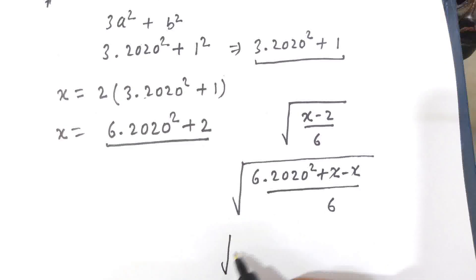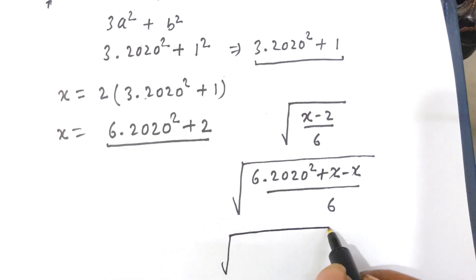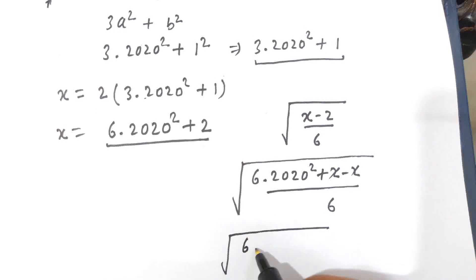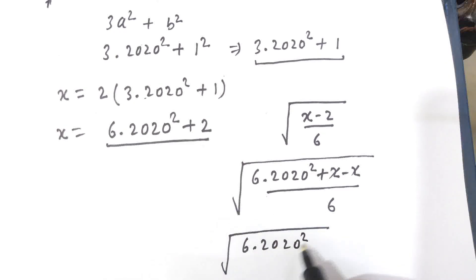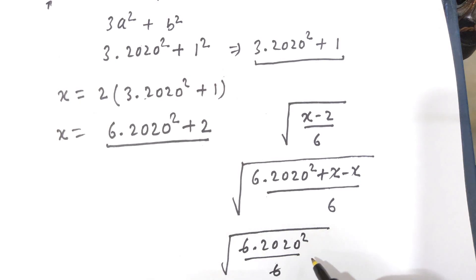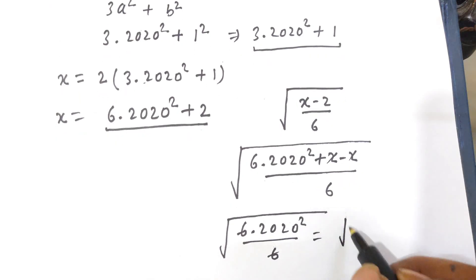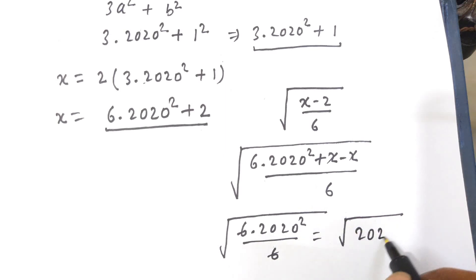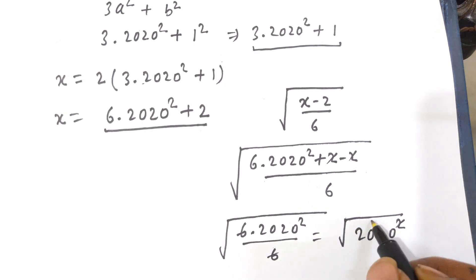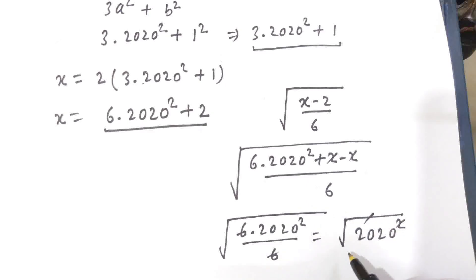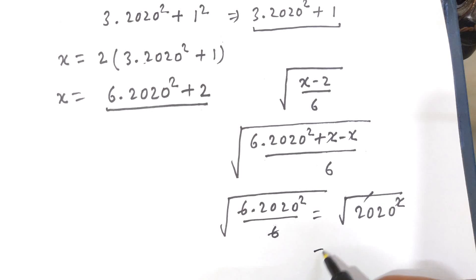So we have square root of (6 times 2020 squared) divided by 6. The 6 in the numerator and denominator cancel out, giving square root of 2020 squared. The square and square root cancel out, so the answer is 2020.